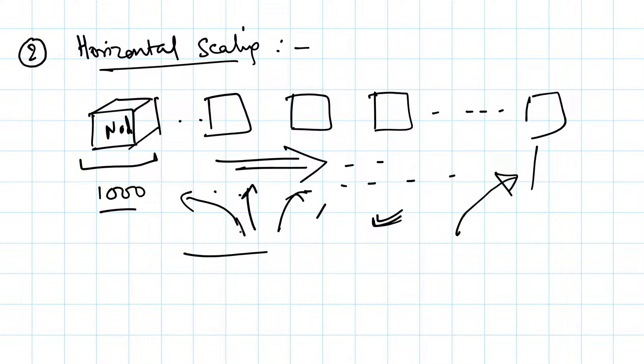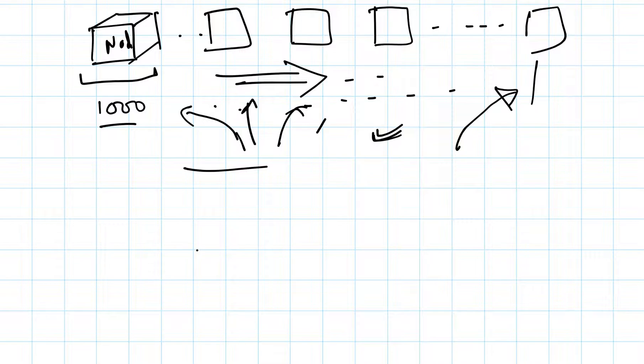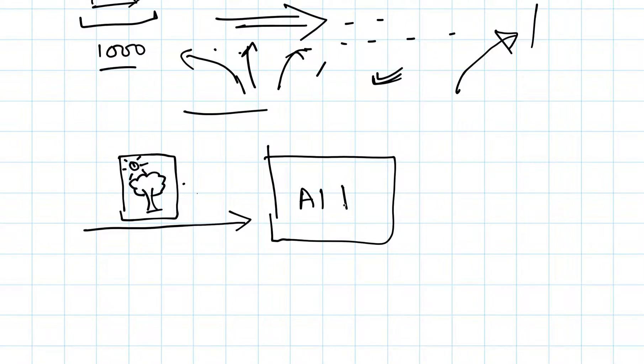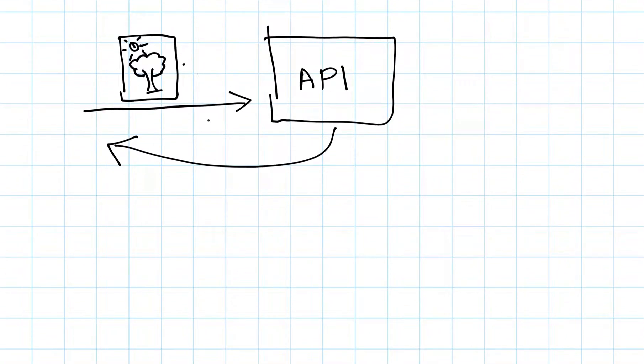These are the two main methods of scaling. Now let's understand this concept with a simple example. Let's say you created one machine learning application where when anybody enters one black and white image, the client sends one black and white image and your CNN-based API processes this image.